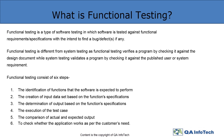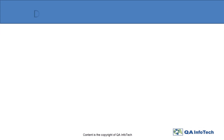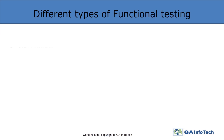Functional testing majorly focuses on six steps. First, identification of those functions that the software is expected to perform. Second, creation of test data which is required during testing. Third, identifying the expected outcome. Fourth, executing the created test cases as per the requirement document. Fifth, comparison of actual and expected output.